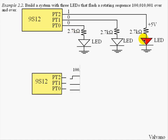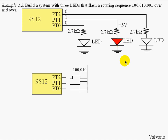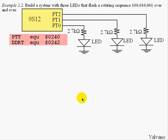In order to make the first LED on we will set the output to one zero zero. Next we will set the output to zero one zero causing the second LED to be on. And finally when the output is zero zero one the third LED comes on.